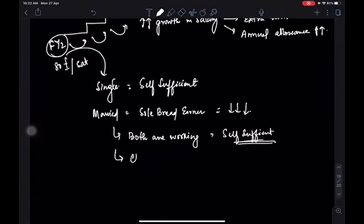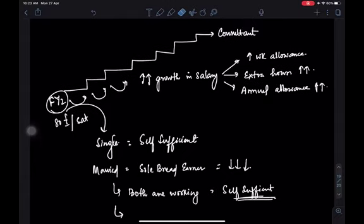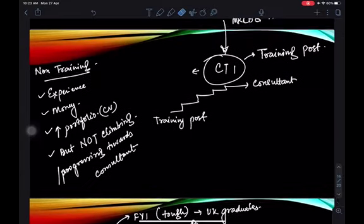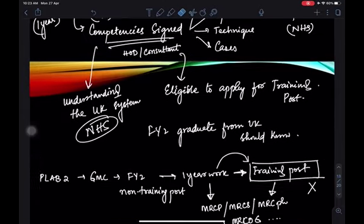If you are a sole breadwinner at the FY2 level, money will be too tight to sustain. And if you have children, do not plan to enter FY2 at that stage — managing will be very difficult. If you already have kids and want to come to the UK, please go into a specialist training programme instead. So to summarise what we've covered: FY2, FY1, pathways, IELTS, OET, training, non-training, and specialist training.